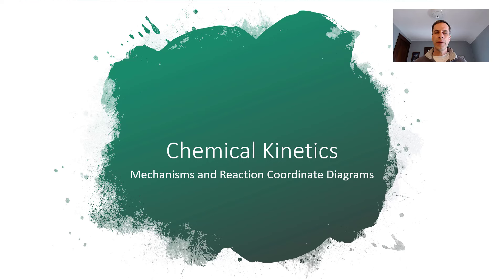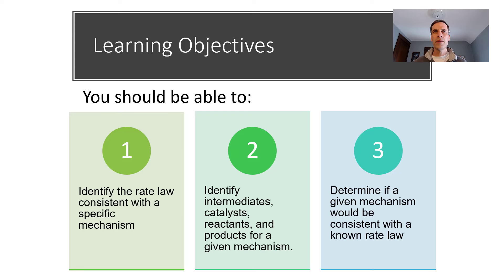Welcome to our pre-class video. This continues our chemical kinetics unit, and today we're really going to be trying to understand mechanisms and how they relate to reactions and rate laws. In class we'll talk about reaction coordinate diagrams. In terms of what we should be understanding, we're looking for the relationship between mechanisms and rate laws as the main focus, as well as identifying the different kinds of species.